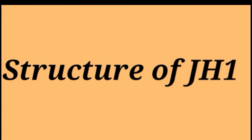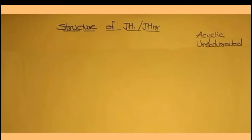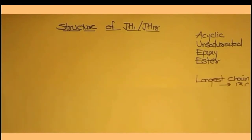Structure of JH1, also called JH18, means it contains 18 carbon atoms. First we will recall the definition of juvenile hormone: they are acyclic, meaning they contain a straight chain; unsaturated, meaning they contain double or triple bonds; and they are acyclic unsaturated epoxy esters, containing both an epoxy group and an ester group. In order to memorize this structure in the simplest way, the longest chain will contain 13 carbon atoms and at the top there will be 6 carbon atoms. So we will start drawing this structure.